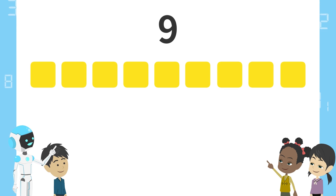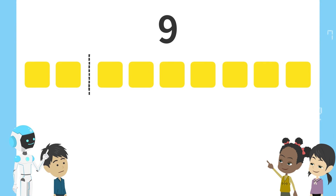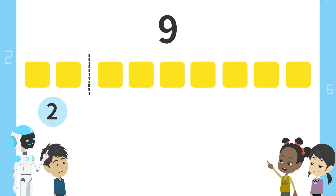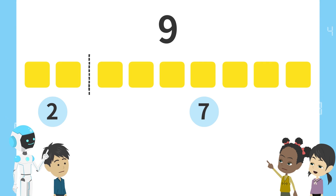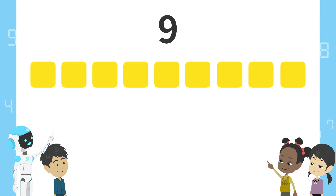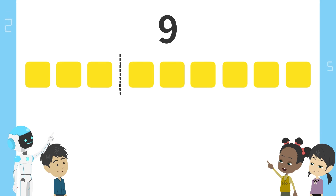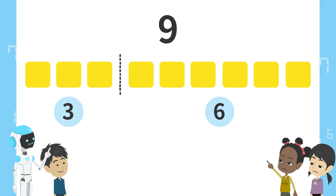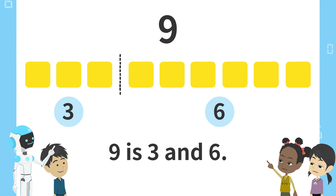Next, here. 2 blocks on the left and 7 blocks on the right. That means 9 is 2 and 7. Right. 9 is 2 and 7. Next, here. 3 blocks on the left and 6 blocks on the right. 9 is 3 and 6.